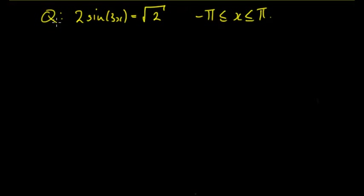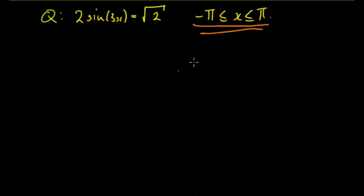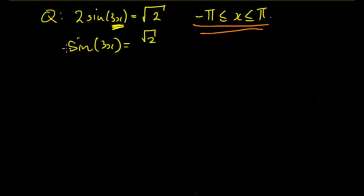Lastly, we'll look at another question: 2sin(3x) = √2, but now there's a domain restriction. Before we found the general solution, but this time we have a specific domain. Working out general solutions and summing them in can be difficult when you have something like 3x, so it's good to have a method that avoids wasting time checking solutions. We start by isolating sin(3x) to get sin(3x) = √2/2, looking at the first and second quadrant with base angle π/4.